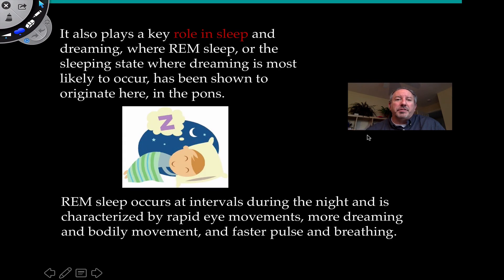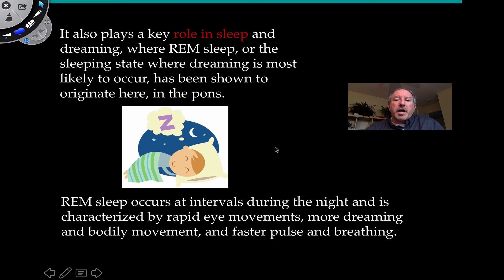Small yet powerful. One of the pons' more interesting functions is that it plays an important role in sleep. There are various stages of sleep, and one of them is rapid eye movement, or REM sleep — a state where dreaming is most likely to occur — and it has been shown that this originates in the pons. REM sleep occurs at intervals during the night and is characterized by rapid eye movement, sometimes bodily movement, and faster pulse and breathing.